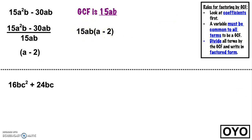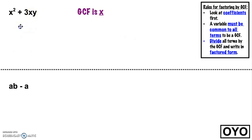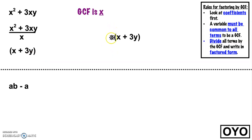What do these two terms have in common? Look at the coefficients first: 1 and 3 don't have anything in common other than 1, so we're not going to pull out a 1 because that won't change anything. Next, look at the variables: these two terms have an x in common, and we can only pull out x to the first power. So our GCF is x. When we divide both terms by x, we're left with x plus 3y. We write that in factored form: x times x plus 3y.